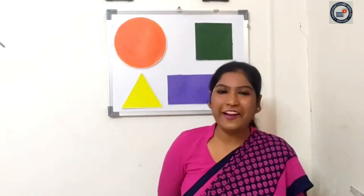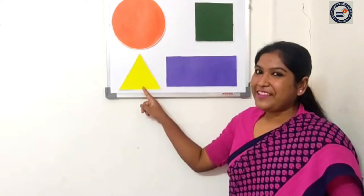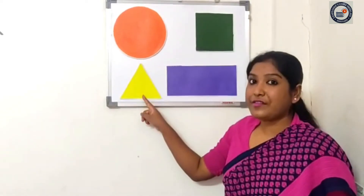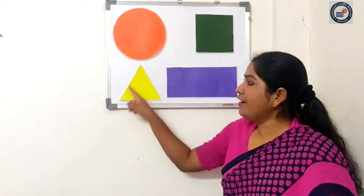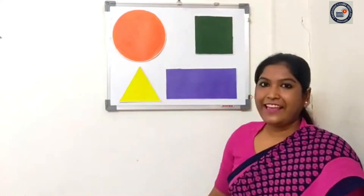Again I will count from one to ten. One, two, three, four, five, six, seven, eight, nine, and ten. Okay, all are ready? Tell me, what is this shape? Yeh kya shape hai? Yes, someone just told me. This is a triangle. Yes, this is a triangle.